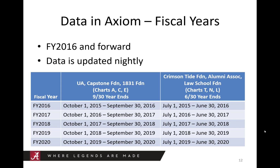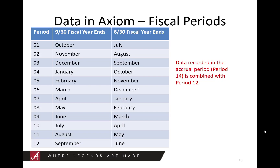Let's take a look at a chart that shows the fiscal years currently available in Axiom by year-end date. It shows UA, Capstone Foundation, and 1831 Foundation — these are all September 30th year-ends, showing the October 1st to September 30th year available for each fiscal year. It also shows the same fiscal years with June 30th year-ends for Crimson Tide Foundation, Alumni Association, and Law School Foundation. Another chart shows the fiscal periods available for the two year-ends, September 30th and June 30th. Note that any data recorded in the accrual period is combined with period 12.